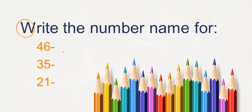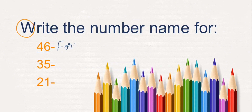First, write the number name. What is the spelling of this number? It is 46. So what is the spelling of 40? Yes: F, O, R, T, Y. And 46: S, I, X.